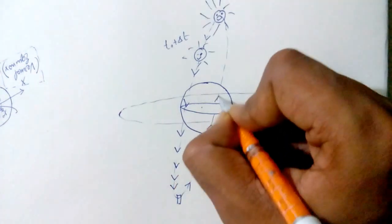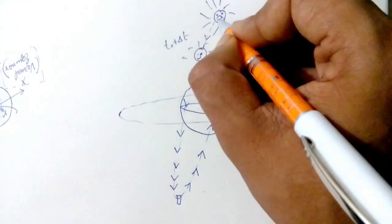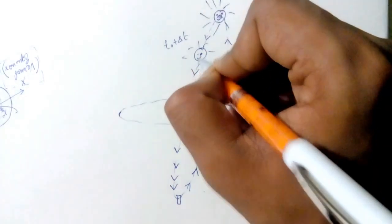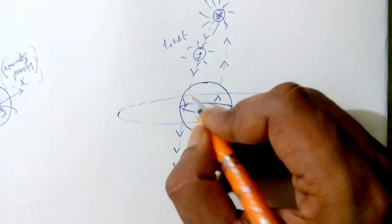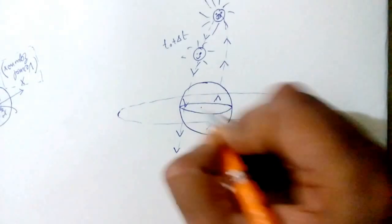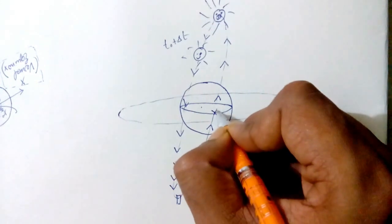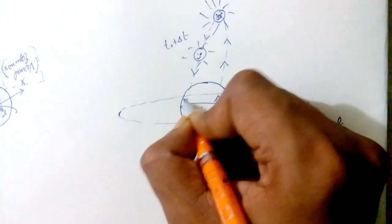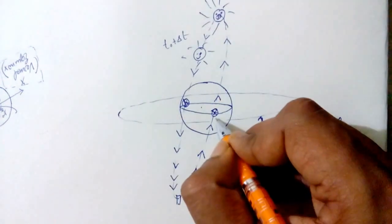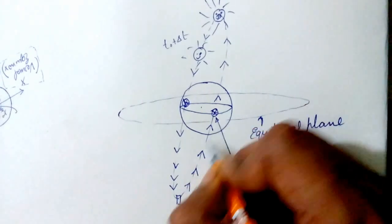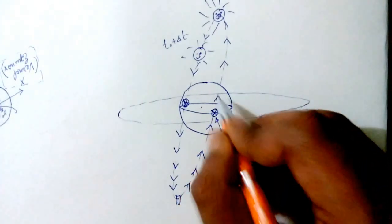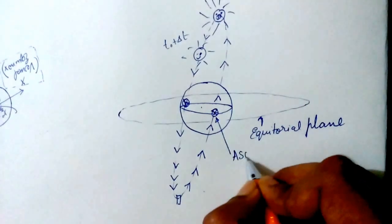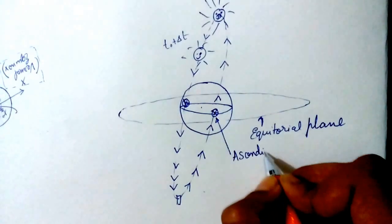And from here on it will ascend. It will go up, up, up, up, and over here it will start descending again. So now you observe that the sun pierces the equatorial plane at two points. The first one is over here, the second one somewhere over here. This point where the sun passes through the equatorial plane while going up is called the ascending node of the sun.